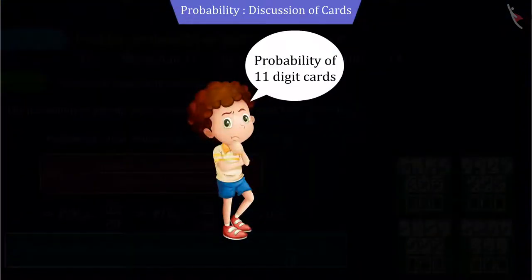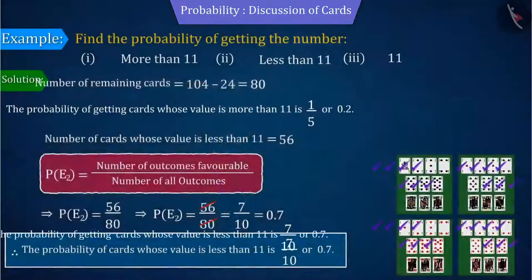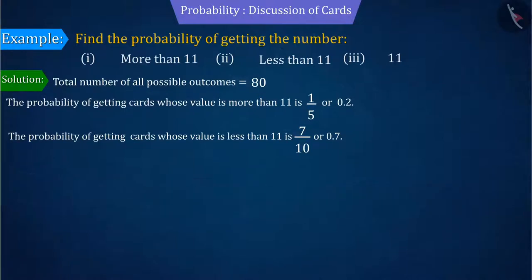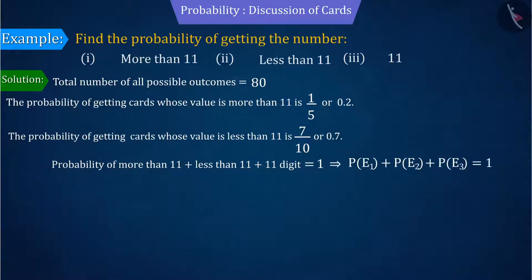So, can you tell without counting the deck of cards what will be the probability of getting a card with 11? We know that the sum of the probabilities of all the elementary events of an experiment is 1. Therefore, with the help of this, we can tell that the probability of getting cards with value 11 is 0.1.